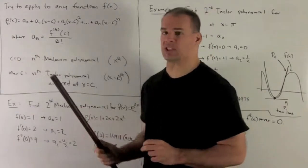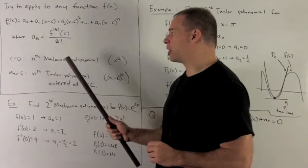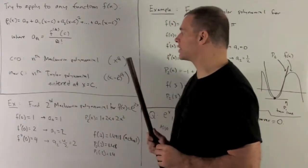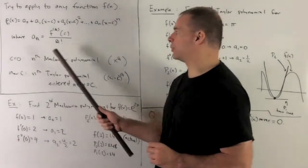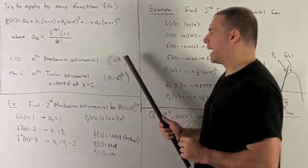If c is equal to 0, it gets a special name, the nth Maclaurin polynomial of f(x). Note in this case, if c is equal to 0, we're just looking at powers of x.